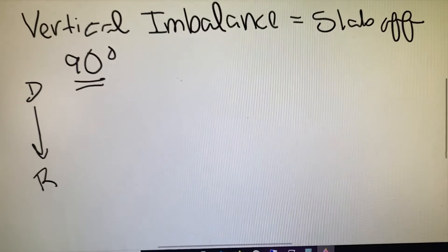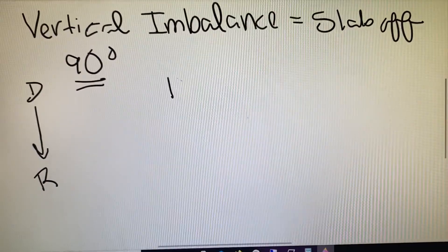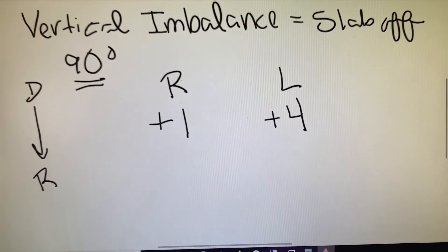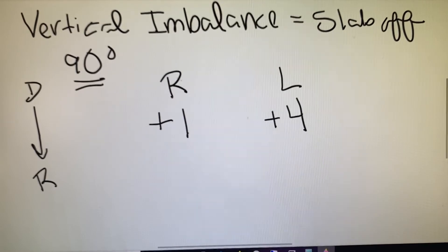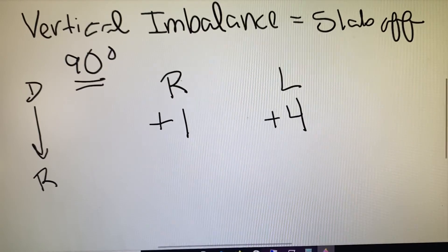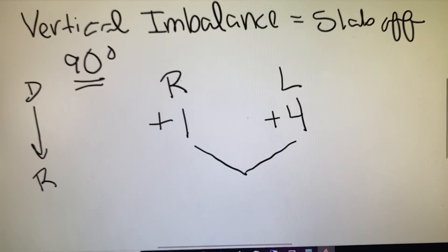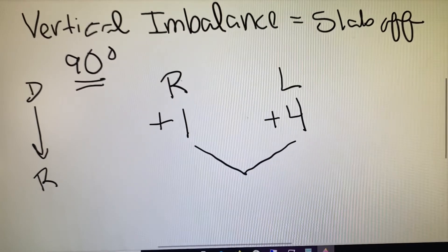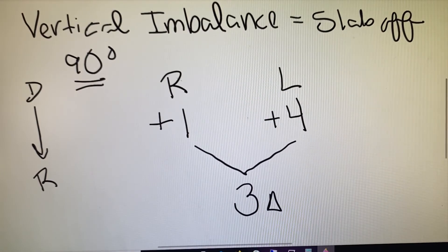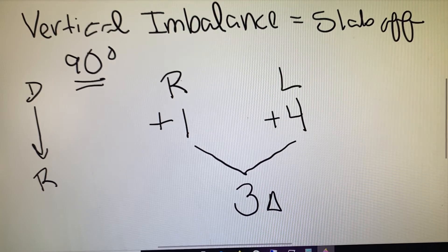If the lenses are spherical, like in our example where the right eye is a plus one and the left eye is a plus four, they are a plus one and a plus four at every meridian including the 90th. The steps for calculating vertical imbalance basically ask: what is the difference between the right and left lens at 90? In this particular case we have a difference of three diopters — three diopters is the amount of difference between our right and left eye.